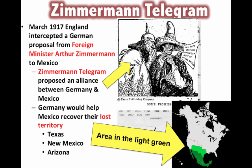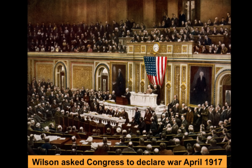In the Zimmermann Telegram, Germany essentially said: join us, Mexico, and we would help you recover your lost territory — specifically Texas, New Mexico, and Arizona, land that had been taken from Mexico during the Mexican-American War of 1846 to 1848. This proposal caused huge anger in the United States. A couple of days later, five more US ships were sunk by Germany, and with the Zimmermann Telegram, America was one step closer to war — leading us to April of 1917, when Wilson asked Congress to declare war against Germany.